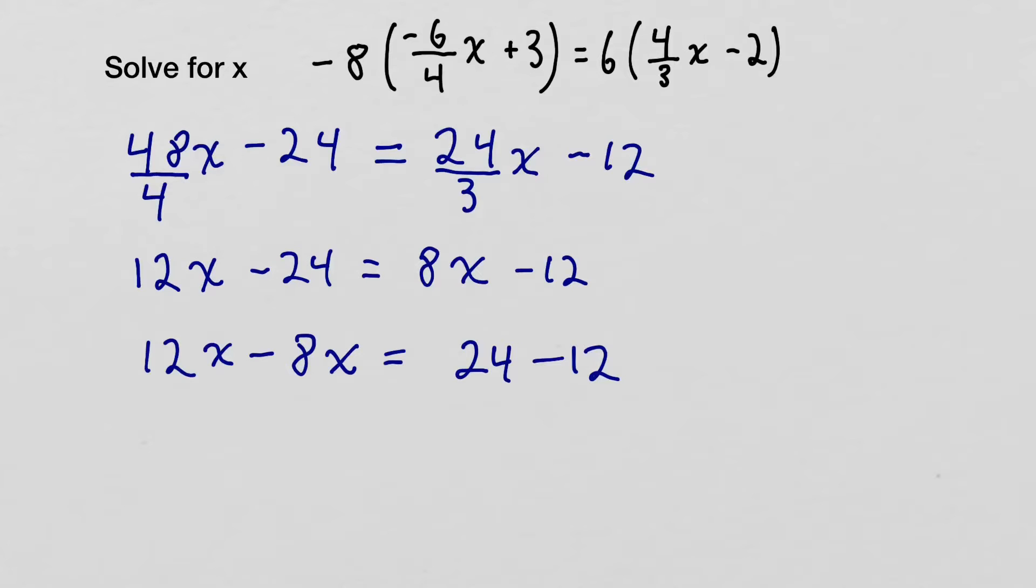Okay, things are looking a lot simpler right now. We just need to combine like terms. So 12x minus 8x, that is going to combine to give us 4x. And we have 24 minus 12. That's going to combine to give us a positive 12. We are just about done.